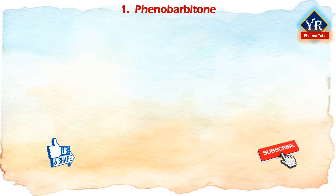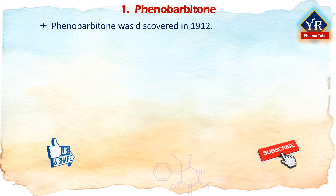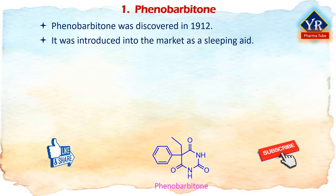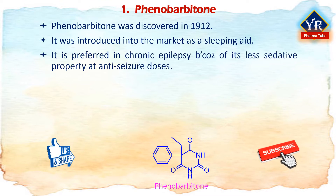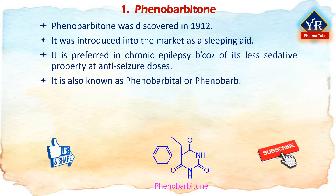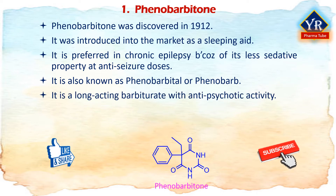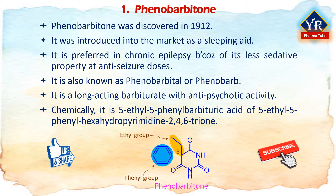Coming to the individual drugs, the first drug of anticonvulsant barbiturates is Phenobarbitone. Phenobarbitone was discovered in 1912 and it was introduced into the market as a sleeping aid. It was serendipitously found to be useful in the treatment of epilepsy. In comparison with anesthetic barbiturates, phenobarbitone is preferred in the chronic treatment of epilepsy because it is less sedative at anti-seizure doses. It is the oldest of the currently available anti-seizure drugs but is no longer a first choice in developed countries because of its sedative properties and many drug interactions. Phenobarbitone is also known as phenobarbital or phenobarb. It is chemically known as 5-ethyl-5-phenyl barbituric acid or 5-ethyl-5-phenyl-hexahydropyrimidine-2,4,6-trione.